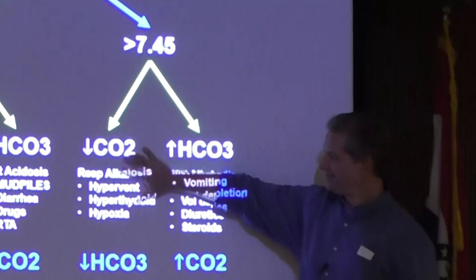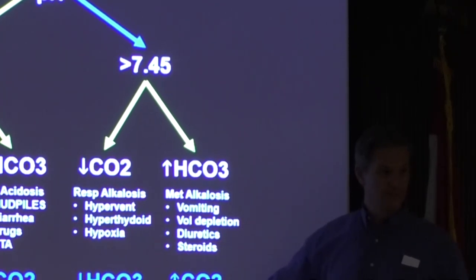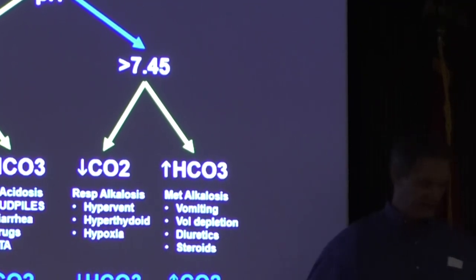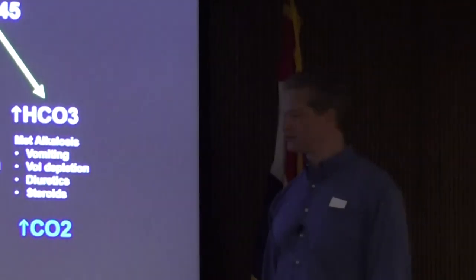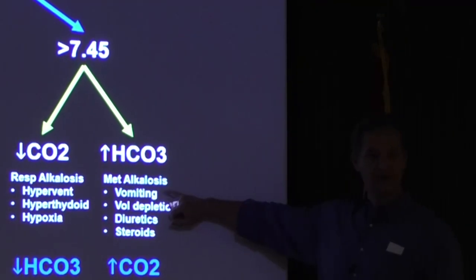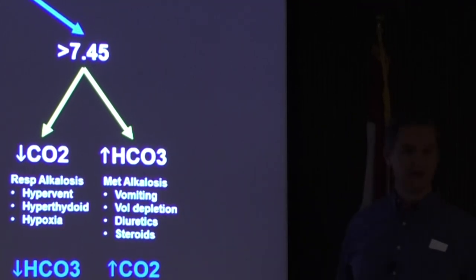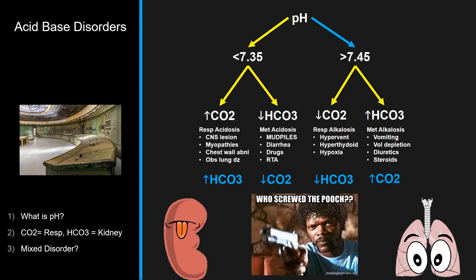Alkalosis: decreased CO2 from hyperventilation - at 15,000 feet, hyperthyroidism like thyroid storm, or hypoxia from an oxygen-deprived environment or aircraft depressurization. Metabolic alkalosis comes from vomiting - like an 18-month-old with pyloric stenosis causing hypochloremic metabolic alkalosis - volume depletion, diuretics, and steroids. The kidneys or the lungs: that's what you're deciding when you look at an acid-base disorder.